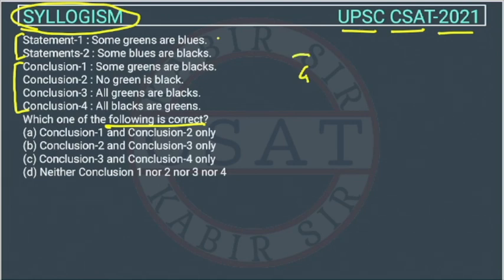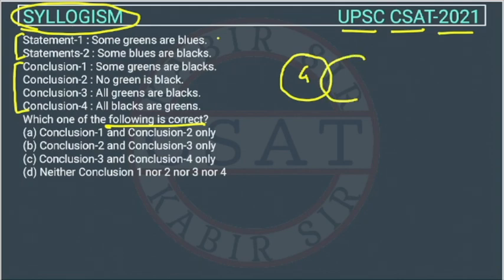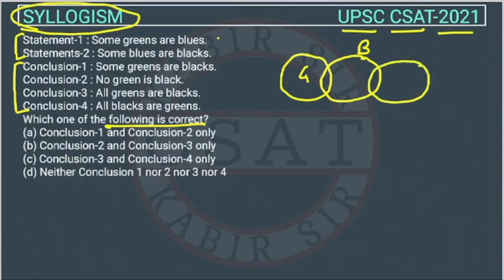Some greens are blue — suppose this is green. This is the Venn diagram of green. Some greens are blue, and this is the Venn diagram of blue. Some blues are black — these blues are black, some blues are black.